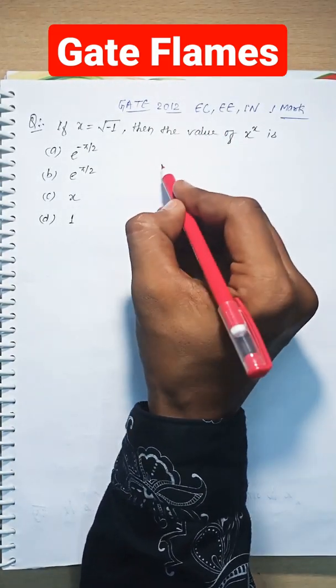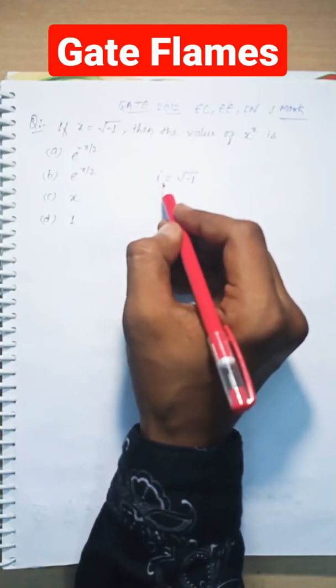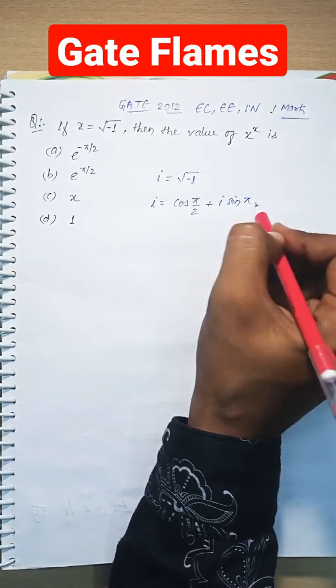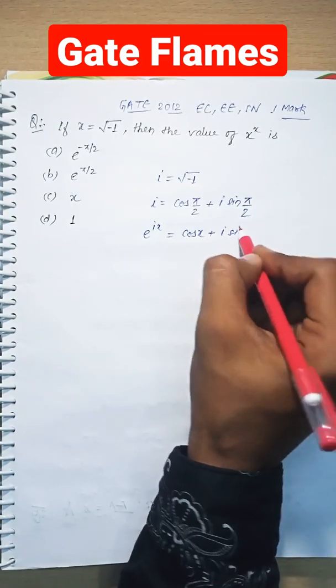Before solving this question, remember three formulas. First, iota equals the square root of minus 1. Second, in polar coordinates we can write iota as cos(π/2) plus i sin(π/2). Third, e to the power iota x equals cos x plus iota sin x.